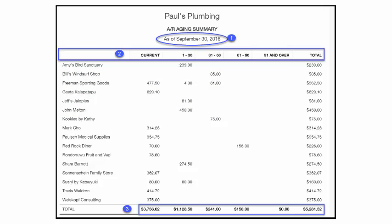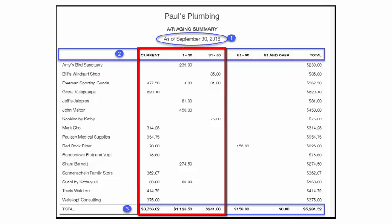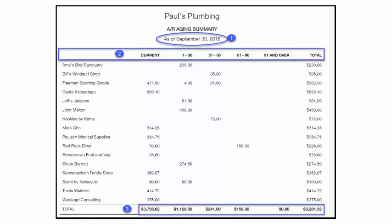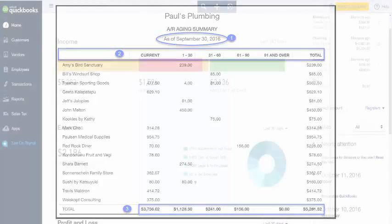At the bottom, box 3 shows the totals by each group or category. A good rule of thumb is to make sure that the majority of your outstanding receivables is within the first three columns. It should be a rare occasion that you have something creep into the 61 and over categories. If you do, be sure to address it quickly.